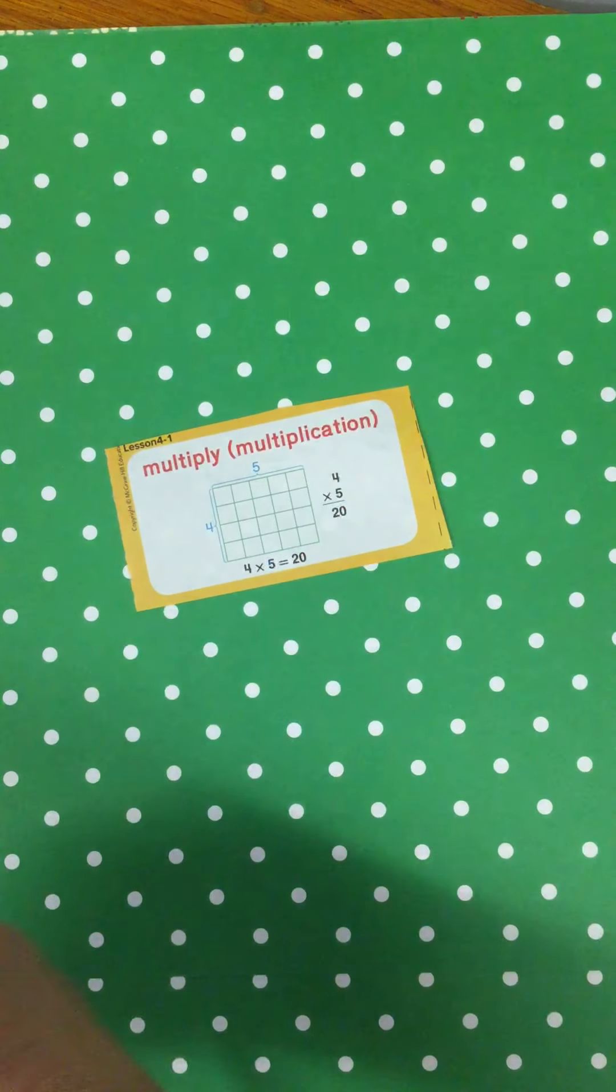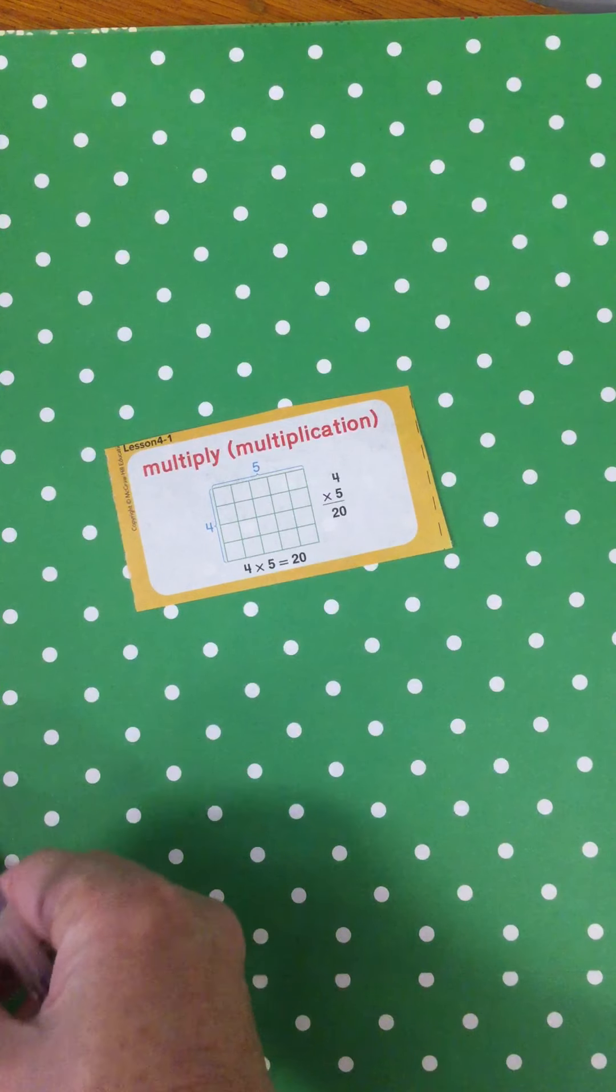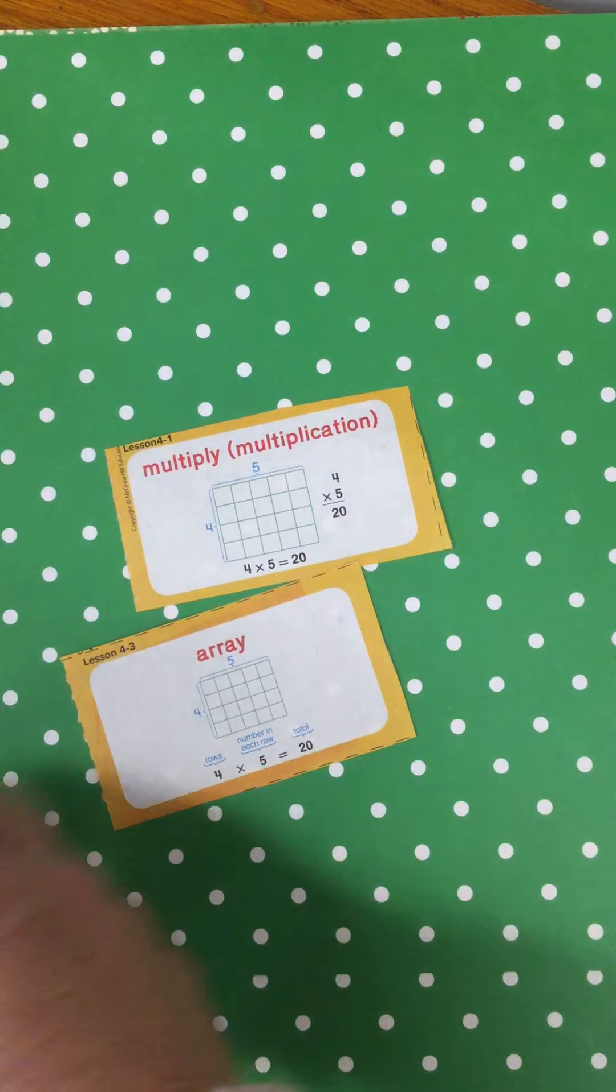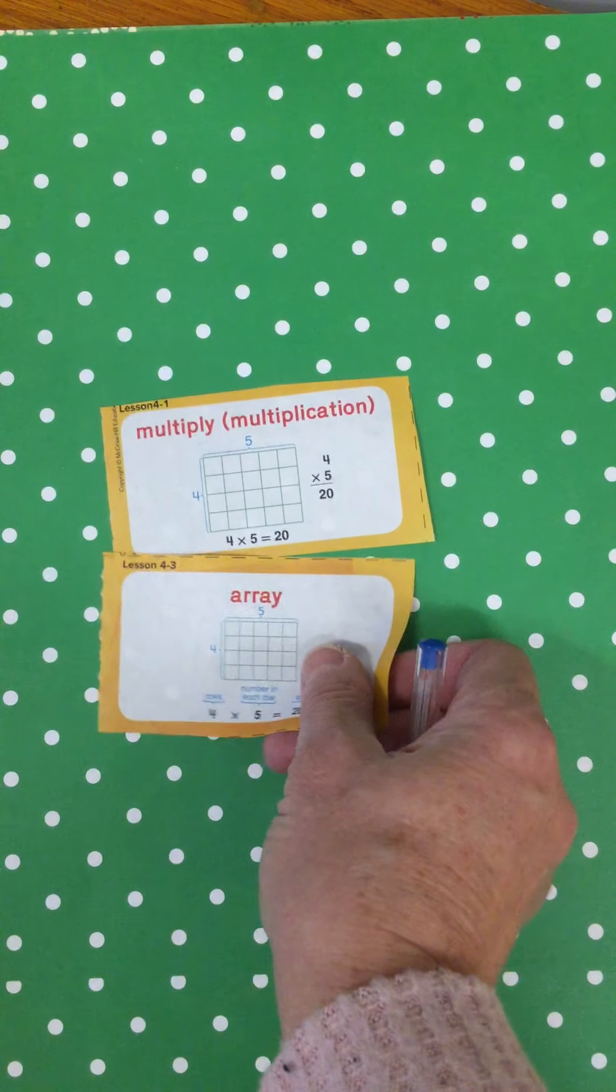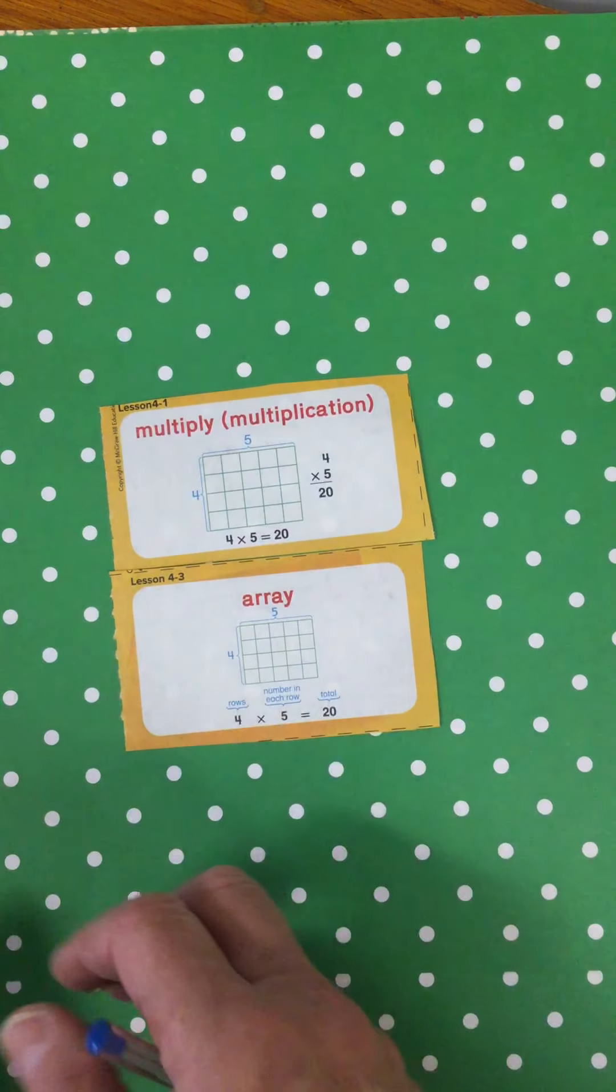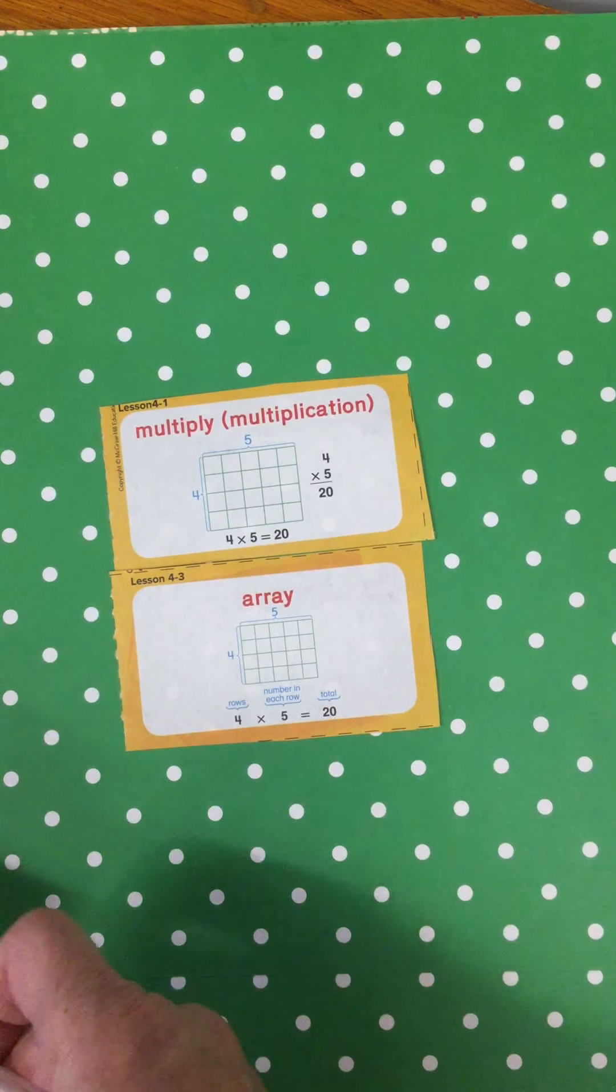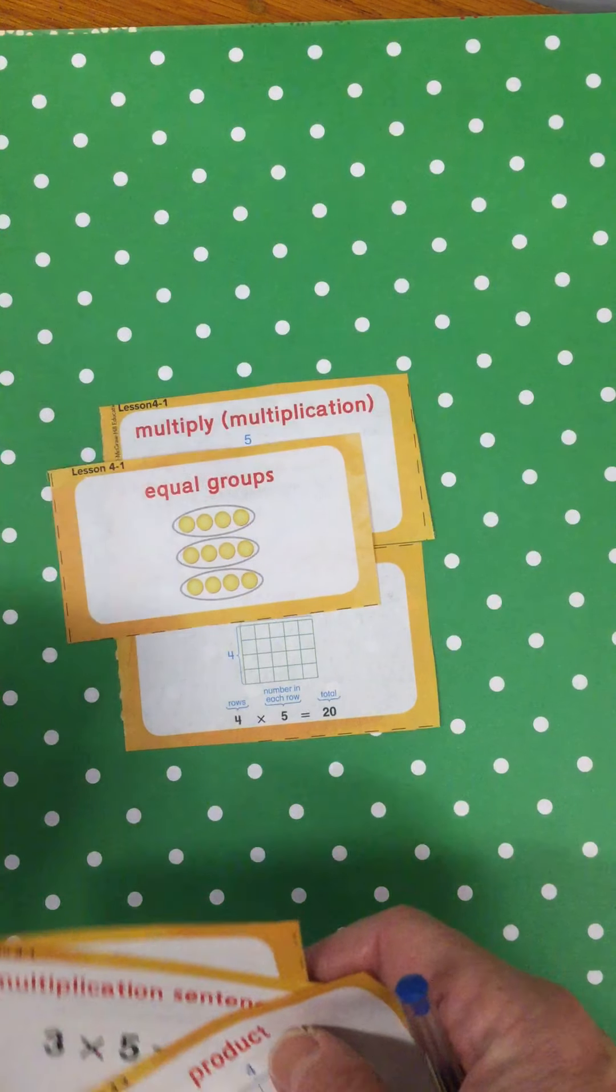So we do a lot with that through this whole chapter. And what are those called? That's learning to multiply using another strategy that's called an array. And you're going to see a lot of those, and we practice that a lot. So what are we doing? We're putting them in equal groups.